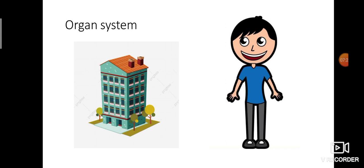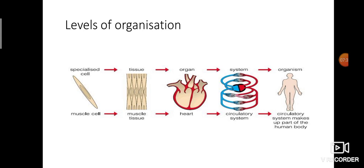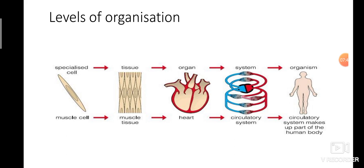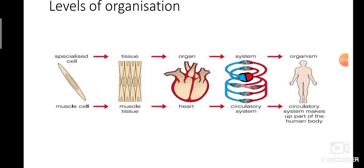Cells are the basic structural and functional unit of our body. Cells join together to form tissues; tissues join together to form organs; organs join together to form organ systems. Here one example is given: a muscle cell. We have different types of cells, different tissues, different organs, and different organ systems. One muscle cell, then lots of muscle cells form together — that is called muscle tissue. Many muscle tissues form the organ, the heart, because the heart is made up of muscles.